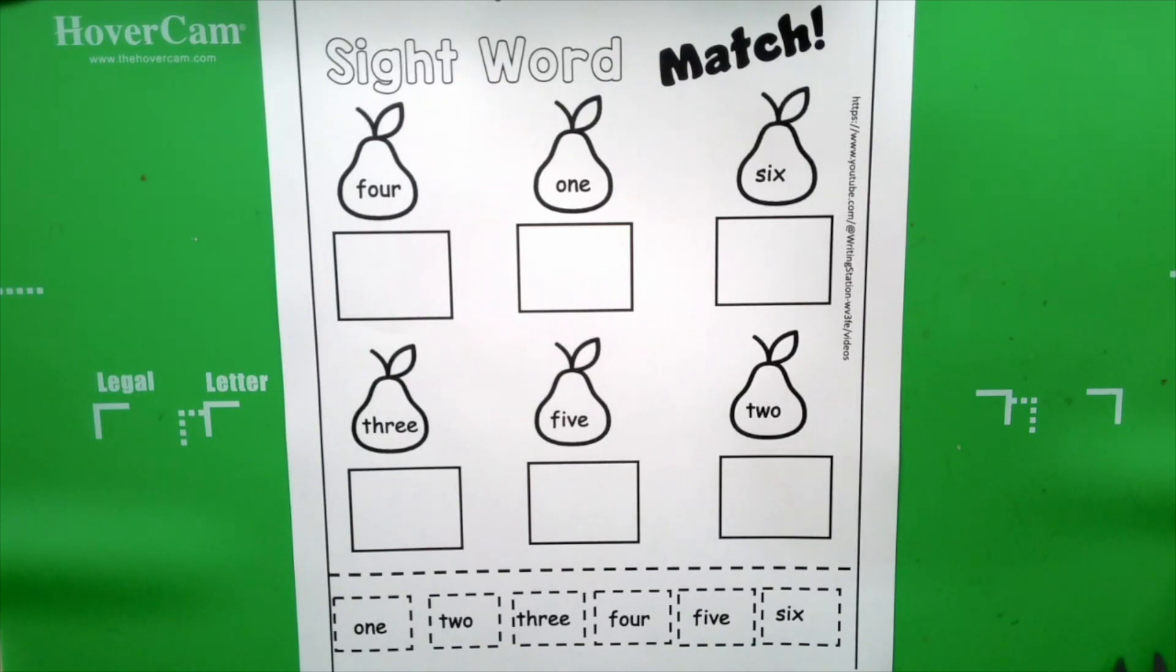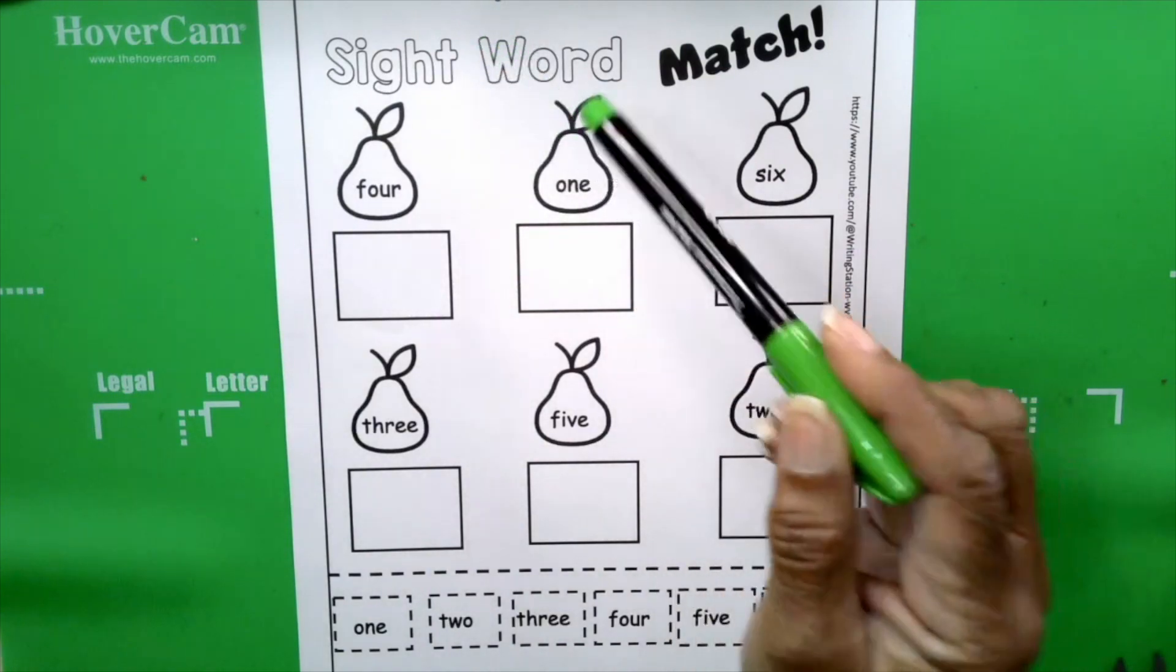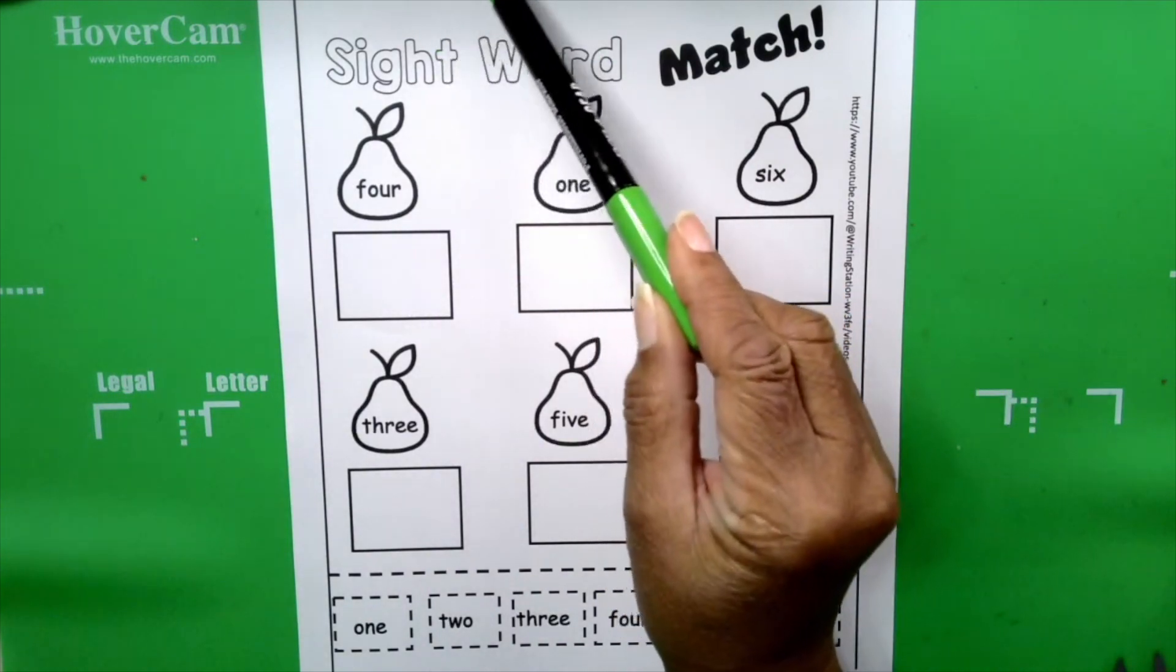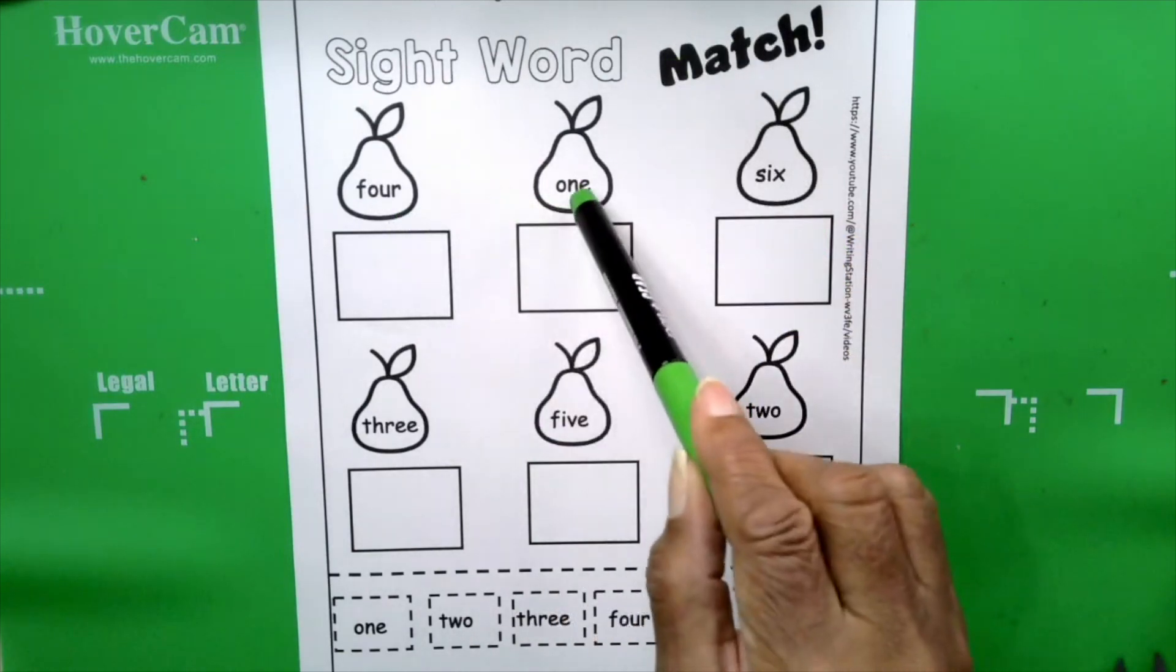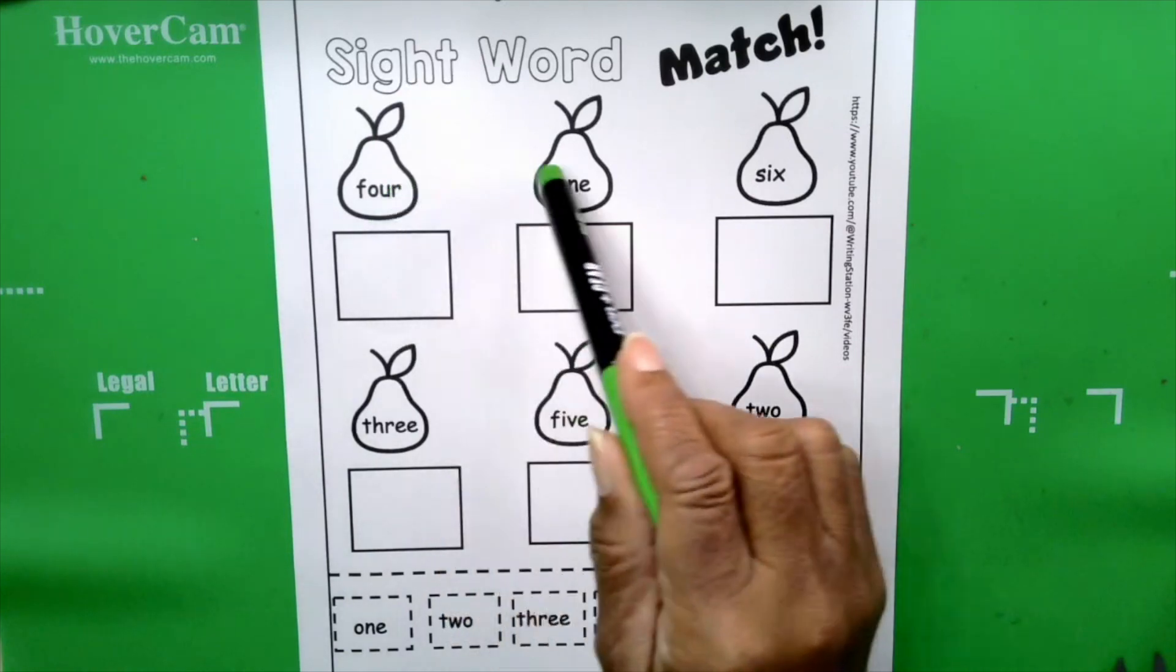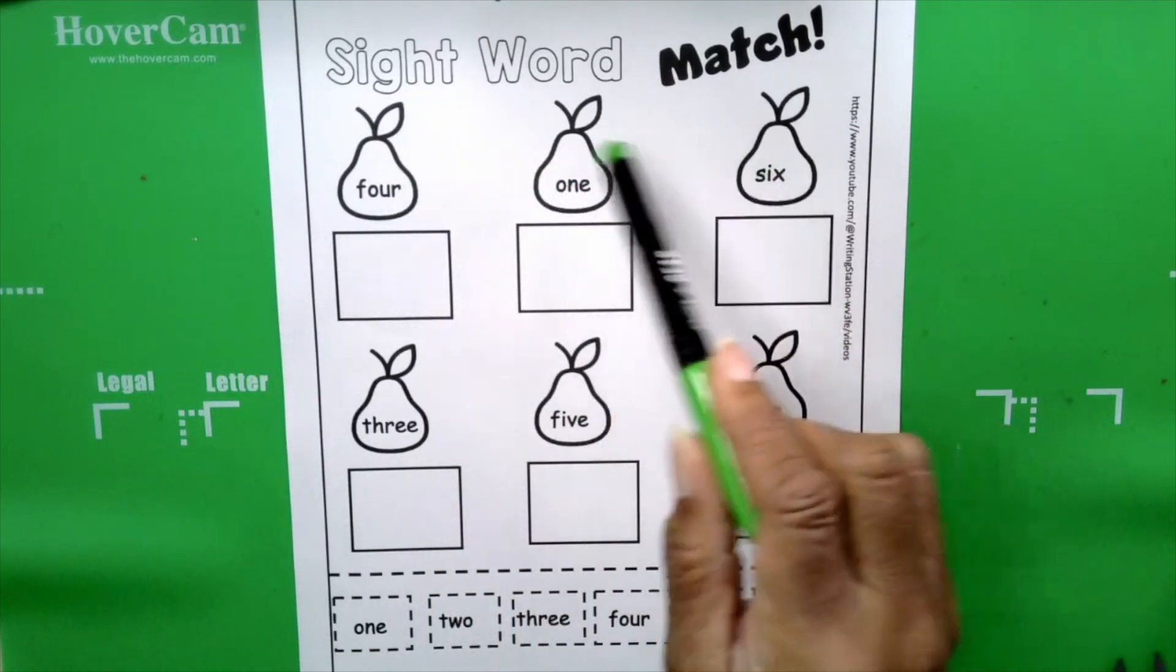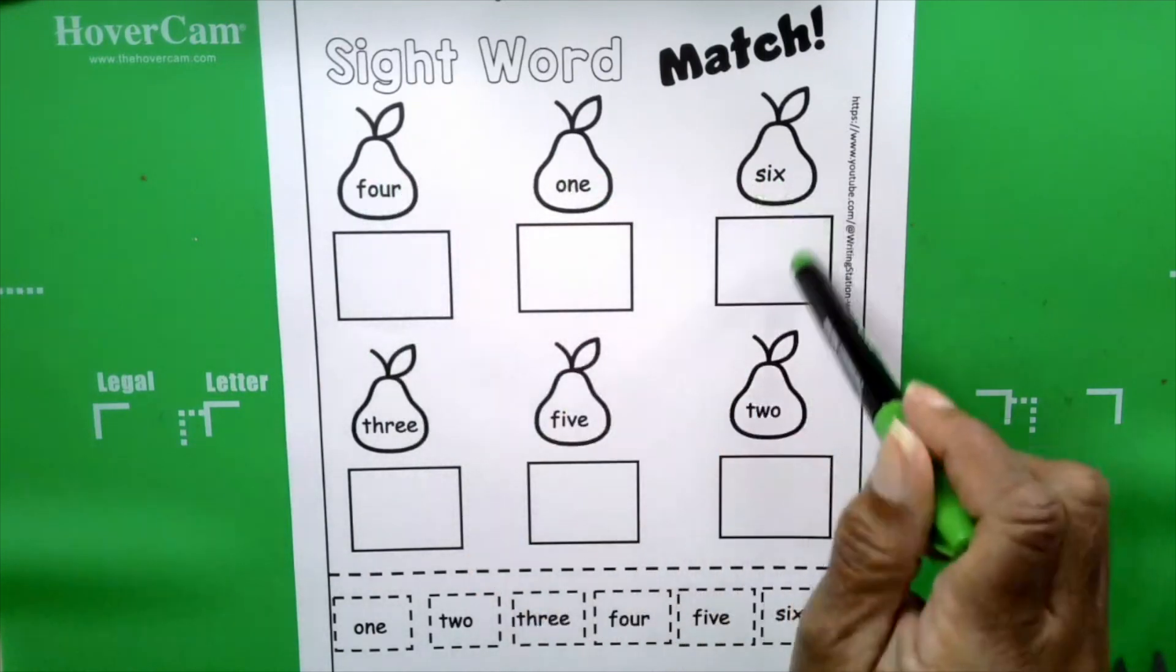Okay, let's read the directions. The directions tell us what to do. Read each sight word. Cut and paste the matching word. So, boys and girls, here are our sight words in the pears. The sight words that we're working with today are actually number words.